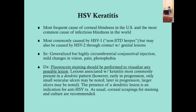HSV keratitis is the most frequent cause of corneal blindness in the U.S. and the most common cause of infectious blindness worldwide. It is typically caused by HSV-1, though HSV-2 can also cause it through contact with genital lesions. HSV-1 occurs in the mucocutaneous distribution of the trigeminal nerve, allowing it to cause keratitis. Symptoms are the same as any keratitis: circumferential conjunctival injection, mild vision changes, pain, and photophobia.